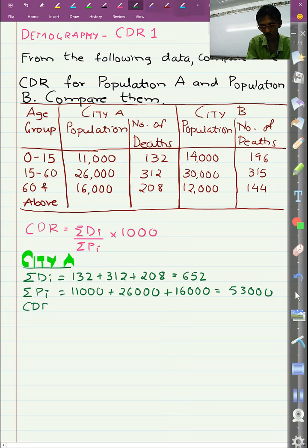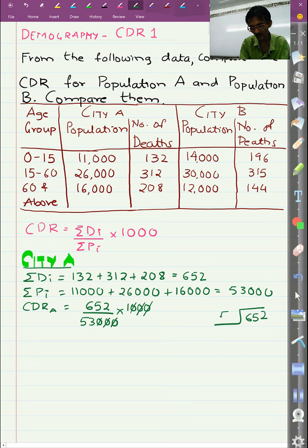So our CDR for City A is total deaths 652 over total population 53000 into 1000. We cancel up the three zeros. We do a simple calculation. We divide 652 by 53.